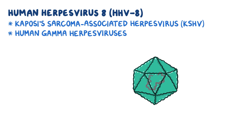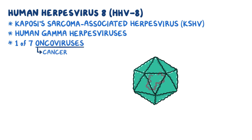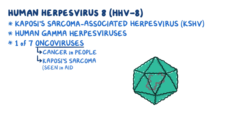HHV-8 is one of the seven known oncoviruses, meaning viruses that cause cancer in people. Specifically, HHV-8 causes Kaposi's sarcoma, a type of cancer usually seen in individuals with AIDS.